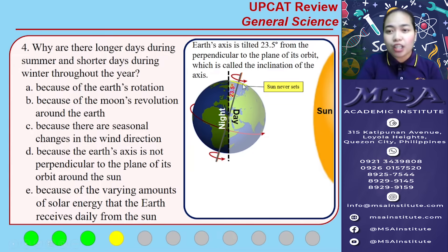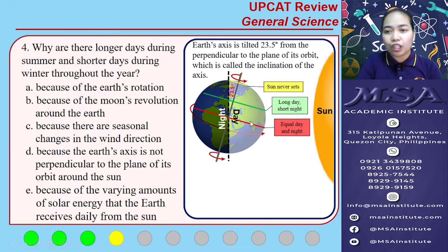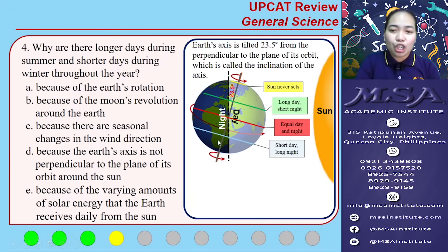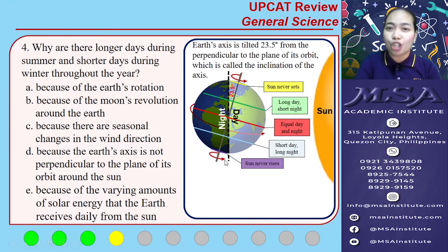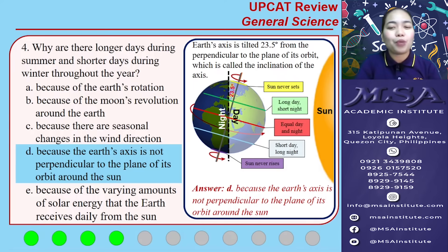Because of this tilt, in some regions the sun never sets, and that part of the Earth experiences a long day and short night. At another part, there is equal day and night. In another region, there is a short day and long night. And at the opposite extreme, the sun never rises. Because of this, the answer for number 4 is letter D.